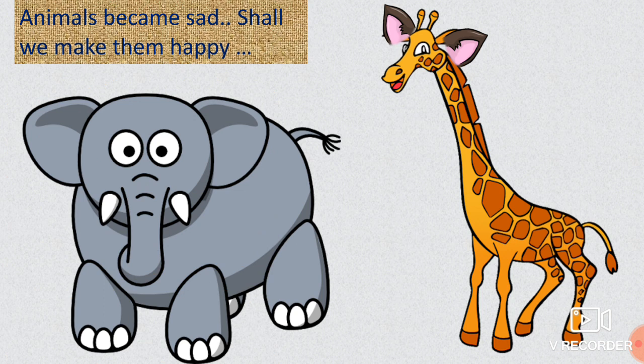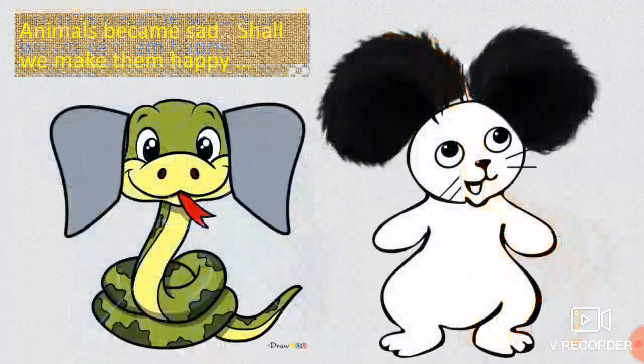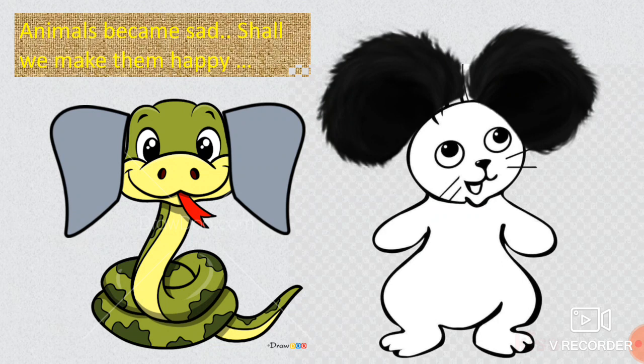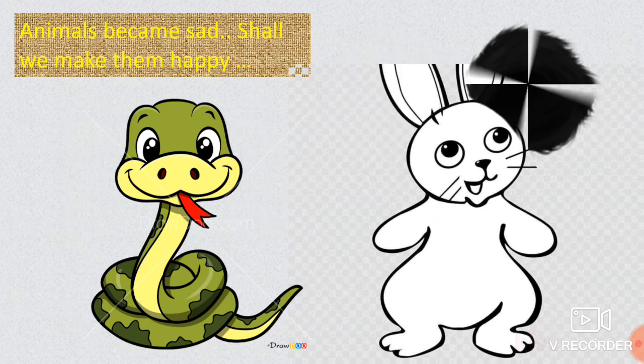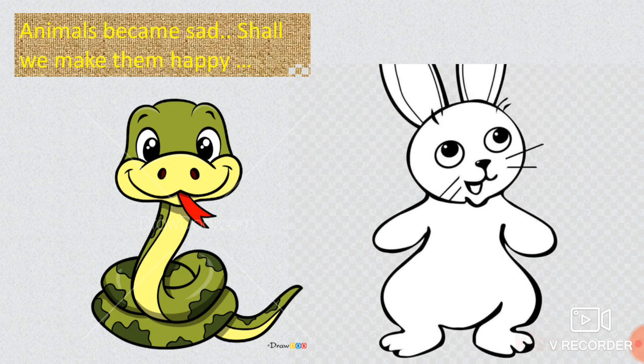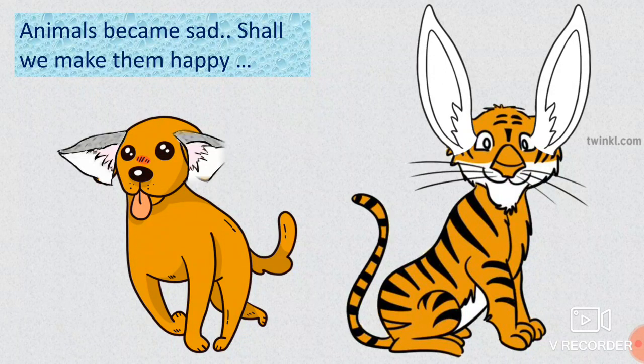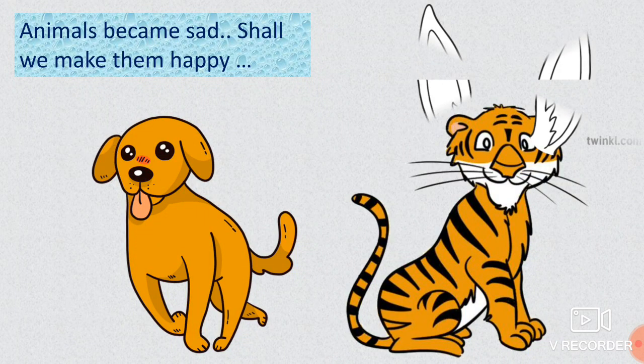The animals are very sad because we made them different. Shall we change it again and make them happy? Now the elephant and the giraffe became happy. The snake and the rabbit are also happy. The dog and the tiger too — wow, clear! Now I replaced the actual ears of all six animals. Whether these changes make the animals behave differently? No, it will not. The animals are the same and the behavior will also be the same.